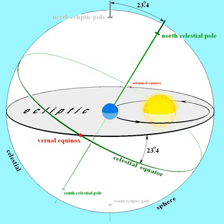It is about 23.4 degrees and is currently decreasing 0.013 degrees per hundred years because of planetary perturbations. The angular value of the obliquity is found by observation of the motions of Earth and other planets over many years.